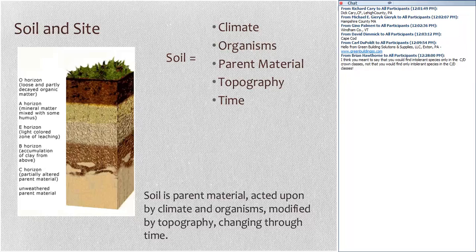The O horizon and the A horizon are where we find most of the roots of trees and plants, and it's these layers that are particularly important in providing mineral nutrition and the correct amount of water for the trees growing there. The soil is influenced by lower levels as the parent material weathers, though that weathering happens on a slower cycle than changes at the surface in the O horizon — the organic layer.